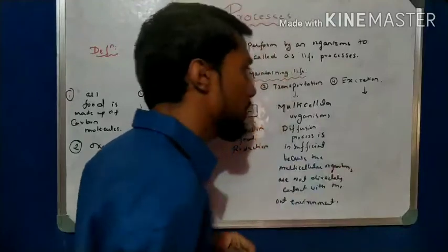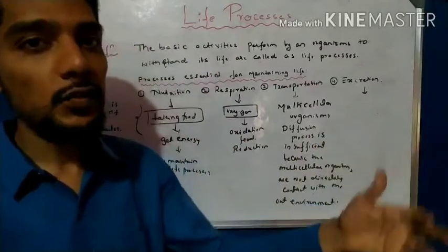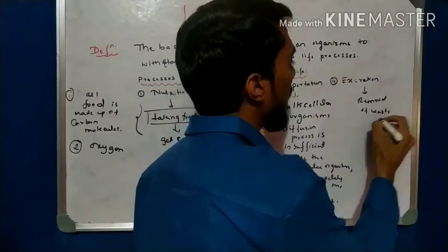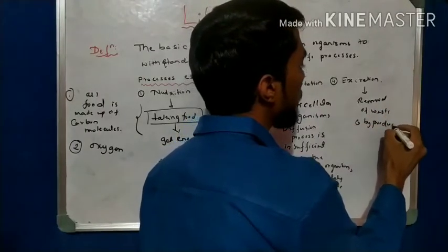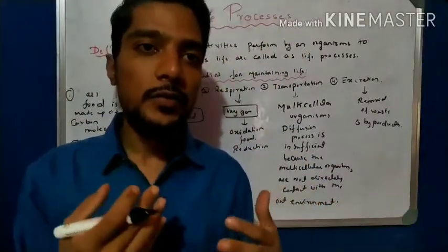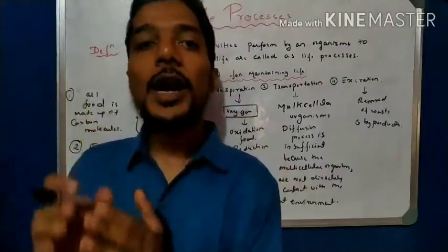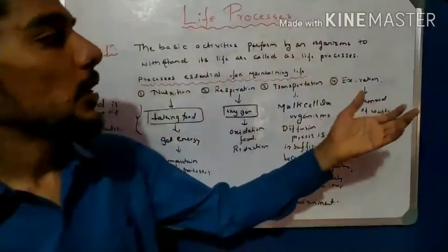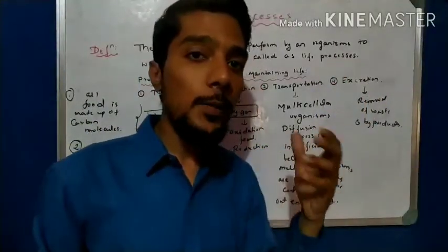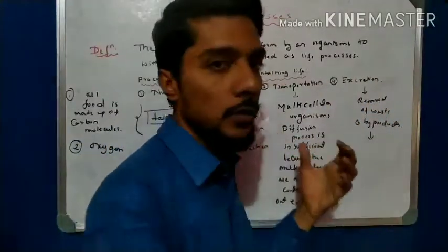Now come to the last point: excretion. Excretion is the process of removal of byproducts and waste from the body. After digestion and respiration, byproducts are formed — for example, in respiration we take in oxygen and the byproduct is carbon dioxide, which is waste. Removal of waste like urine is nothing but excretion. In excretion, we study about the kidneys — a pair of kidneys.